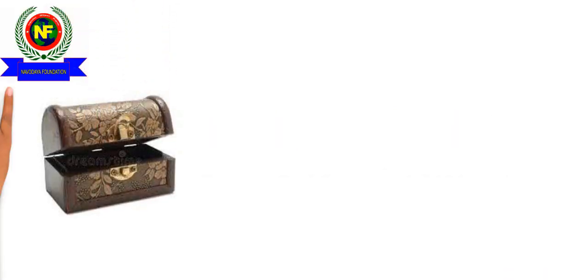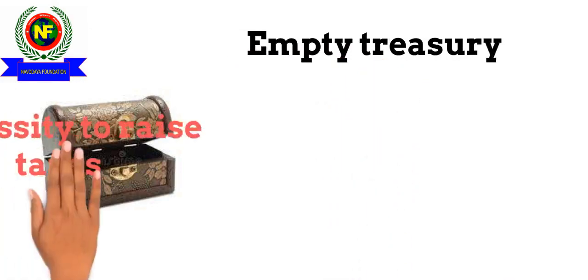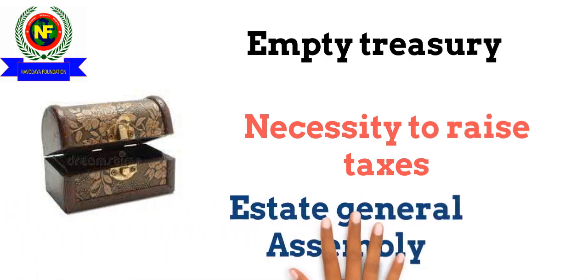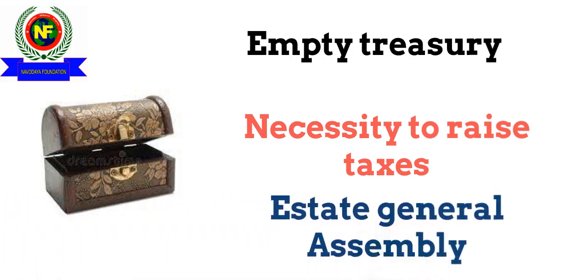We have already seen in the previous video about why the treasury of the state was empty, and due to this, the emperor Louis XVI was thinking of ways to increase it. But France had a system in which no emperor could alone take a decision to increase the taxes, and to decide upon this, there was a political body termed as Estates General Assembly.